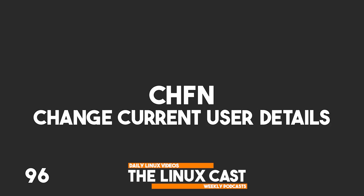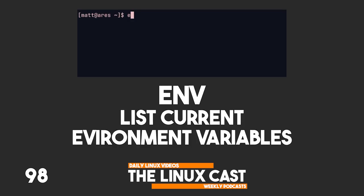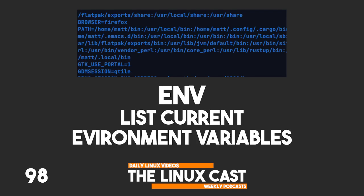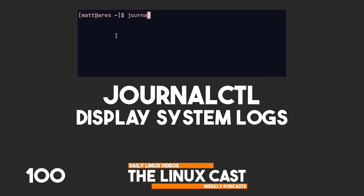chfn changes current user details. chgrp changes group ownership of a file or directory. env prints the current list of environment variables. rsync backs up directories to another location. journalctl is used to display systemd and kernel logs.